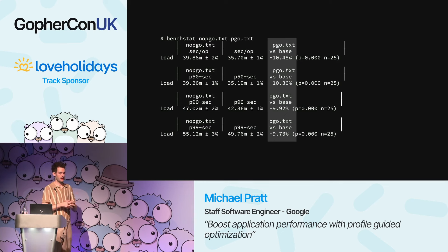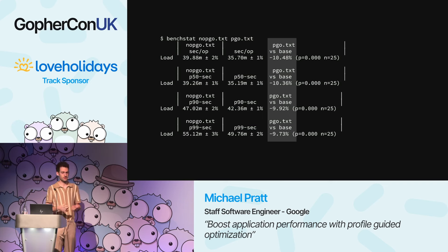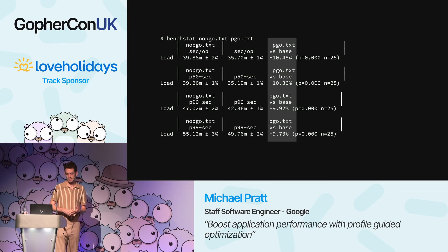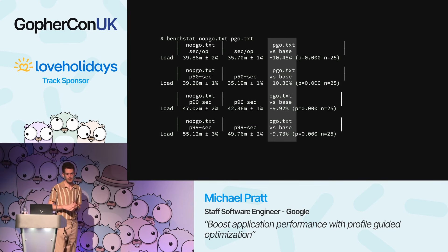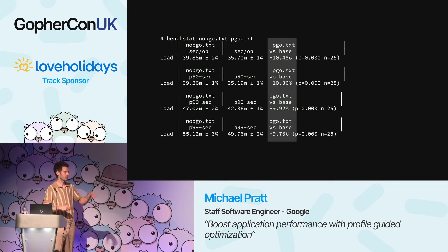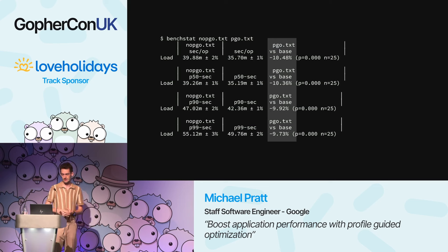After building with PGO, measuring CPU and latency metrics on both the original server and the PGO-optimized server using the benchstat tool shows about a 10% improvement across all metrics. That's pretty great considering we just ran a couple of commands and gave the compiler a little more information. PGO is optimizing many low-level details like inlining, so the high-level observations from the flame graph still apply if you wanted to optimize further.